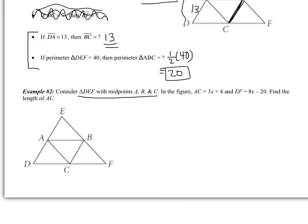It says in the figure, AC is 3X plus 4, and EF is 8X minus 20. Find the length of AC. Well, I could find AC if I knew what X was. So really, I have to start by finding X. What's really tempting is to set 3X plus 4 equal to 8X minus 20.